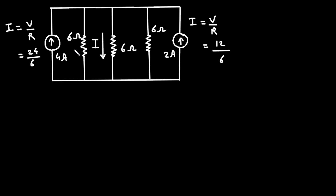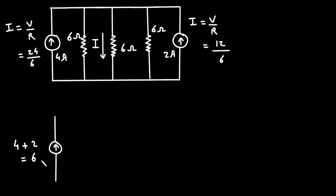Now all of these components are in parallel. We can see that the direction of this 4 ampere current source and the direction of this 2 ampere current source are both upward — the same direction. So we will add them because their direction is the same and they are connected in parallel: 4 plus 2 is equal to 6 ampere. We will keep the other circuit as it is.